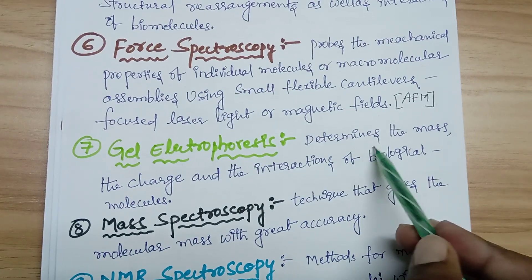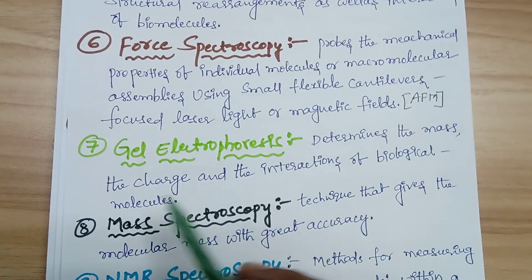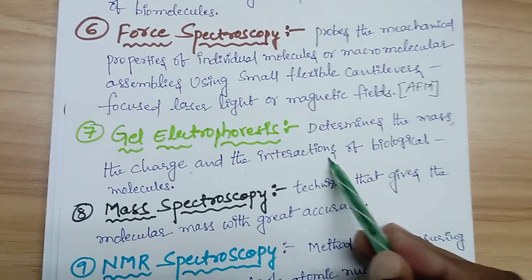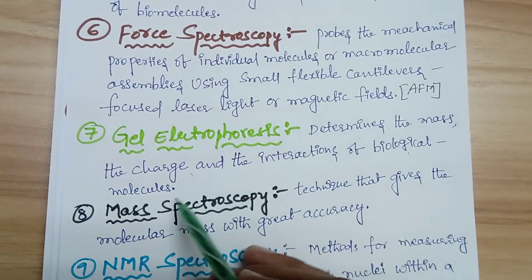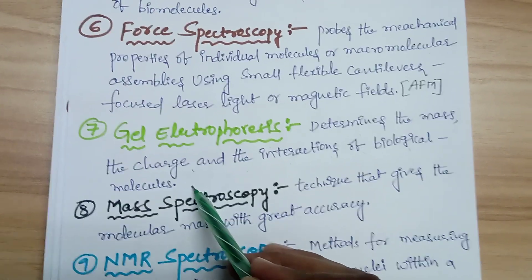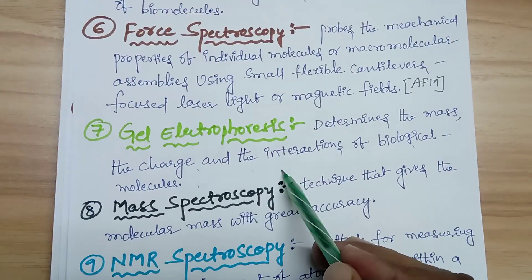Gel electrophoresis determines the mass, charge, and interactions of biological molecules. These are the main concepts of gel electrophoresis.